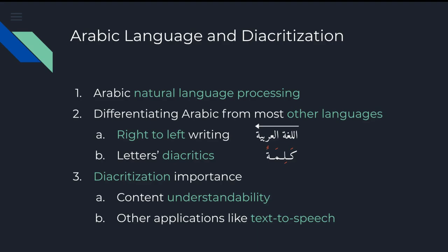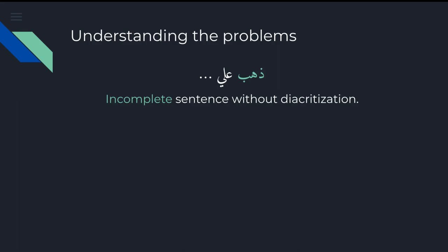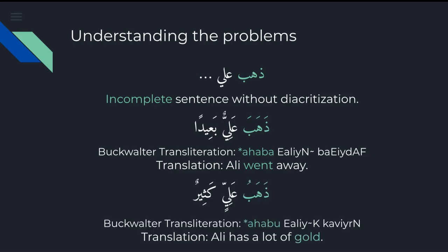Standard Arabic is split into classical Arabic, like old books and poetry, and modern standard Arabic, which is used in today's books, news, articles, and magazines. Here's an example explaining the dependencies between words and how context from both left and right can have an impact on the word's diacritization. If we have the incomplete sentence ذهب علي, then depending on the last word, the first word might be ذهب meaning 'went' or ذهب meaning 'gold'.